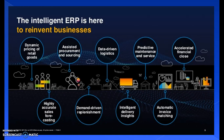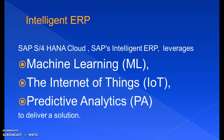Intelligent ERP reinvents businesses through dynamic pricing for retail goods, highly accurate sales forecasting, assisted procurement and sourcing, demand-driven replenishment, data-driven logistics, intelligent delivery insights, predictive maintenance and services, automatic invoice matching, and accelerated financial closures. We're going to discuss how exactly 1808 enables all these things in coming sessions. Intelligent ERP primarily makes use of machine learning, Internet of Things, and predictive analytics, along with natural language processing.